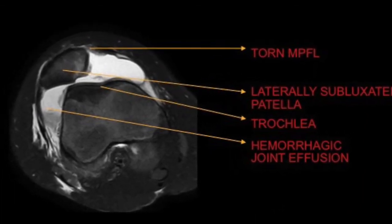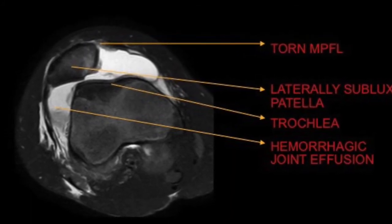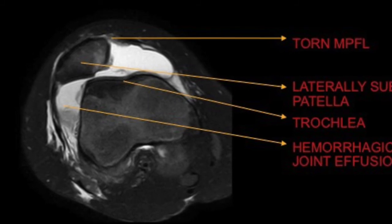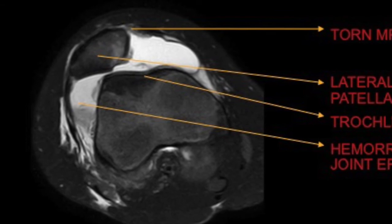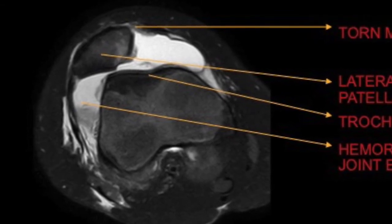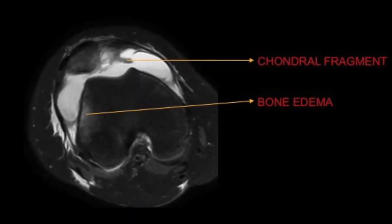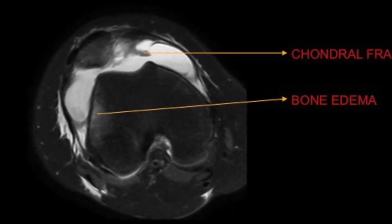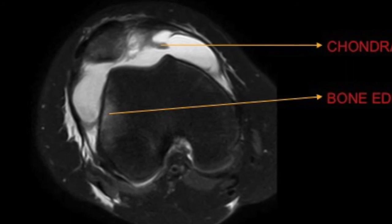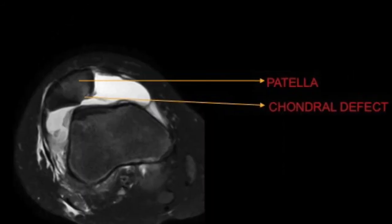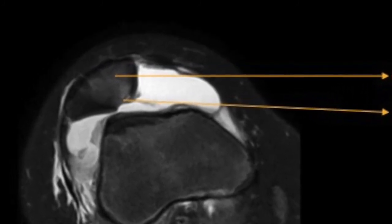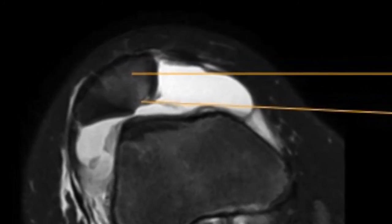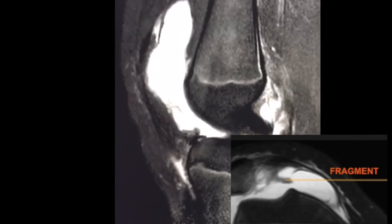Typical MR findings, as we see in this case, include a laterally subluxed patella. The medial patellofemoral ligament is torn from the patellar aspect, and hemorrhagic joint effusion is seen. There is typical edema in the medial aspect of the patella and the lateral femoral condyle in acute patellar dislocations. Apart from this, there may be an osteochondral or chondral defect from the patella, as seen here from the median facet area. On careful viewing, the chondral fractured fragment was seen lying within the hemorrhagic joint effusion.